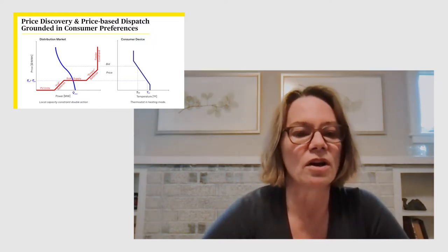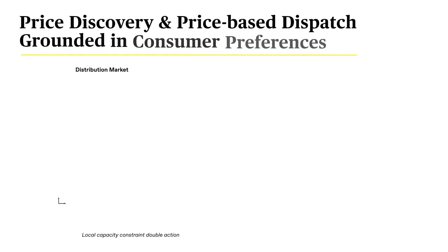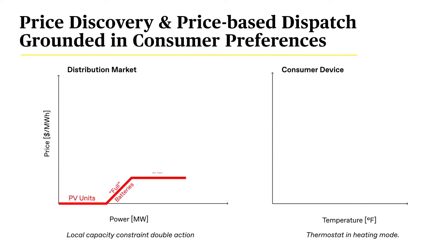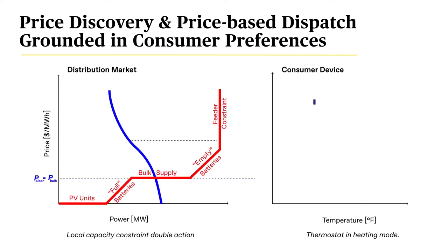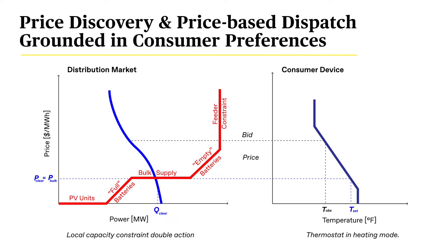We are right now working on thinking about how batteries fit into a transactive system. The bids — or offers, since they're on the sell side when discharging — are going to depend on their state of charge. If they need to charge, they're on the demand side. Batteries are a really interesting and complicated resource, but they can potentially provide a lot of flexibility.